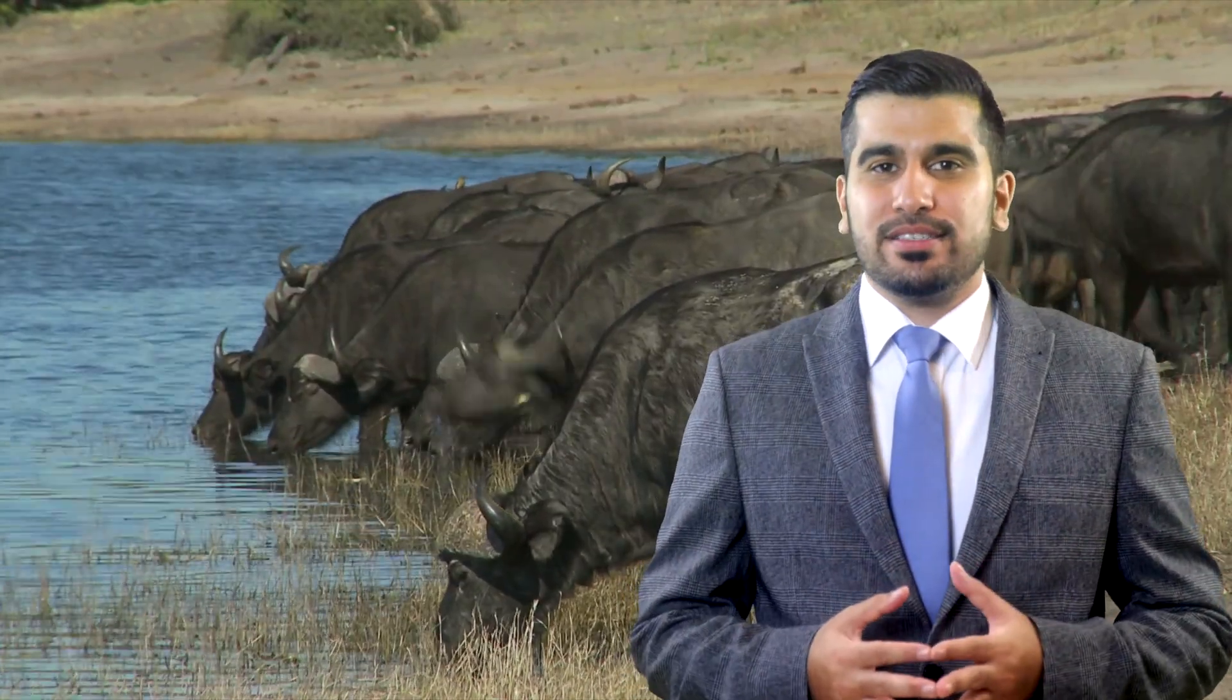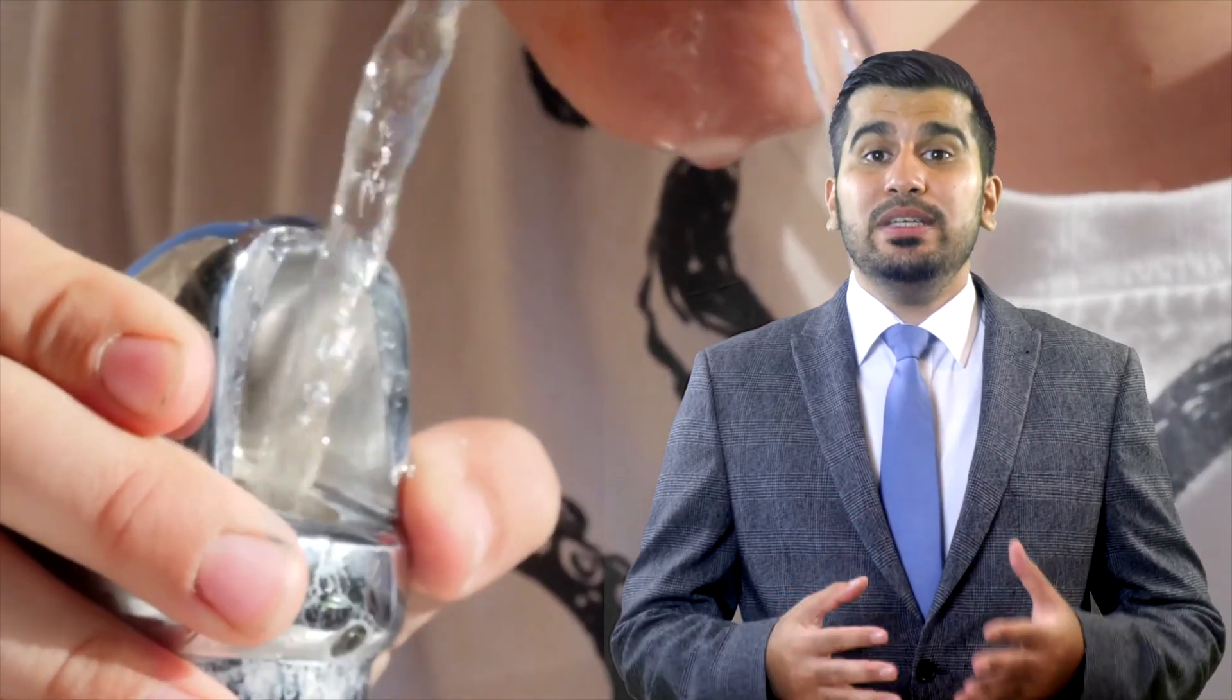Water covers 71% of the Earth's surface, yet only 1% of all water on Earth is actually usable by humans and many other living things. Did you know you can live up to 30 to 40 days without food, but you can only last around 3 days without water?